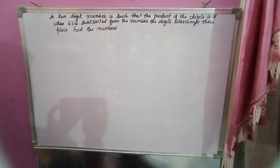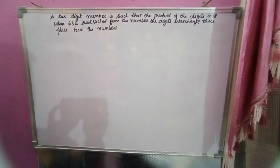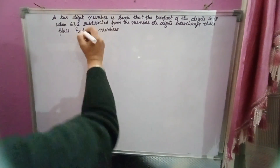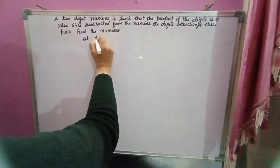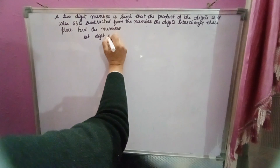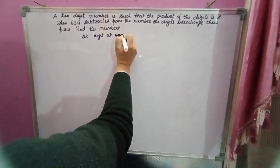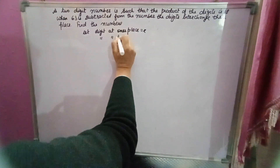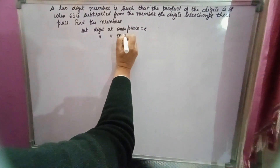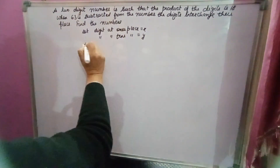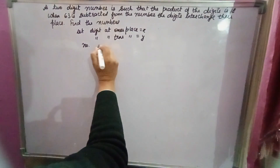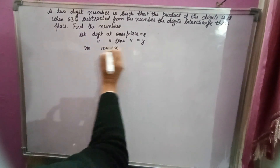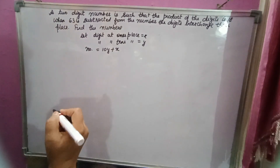The product of digits is 18. When 63 is subtracted from the number, the digits interchange their place. Find the number. Let the digit at one's place be x and the digit at the tens place be y. The number will be 10y plus x.